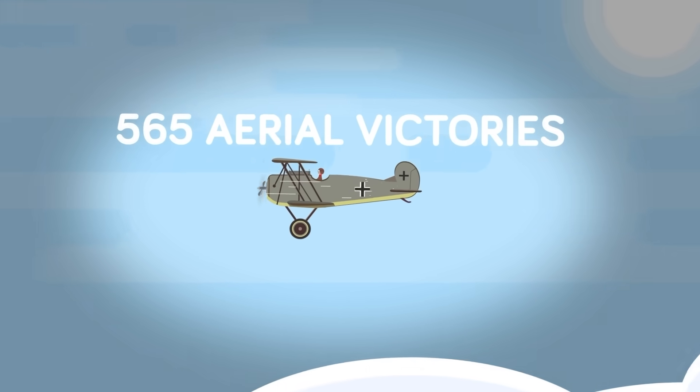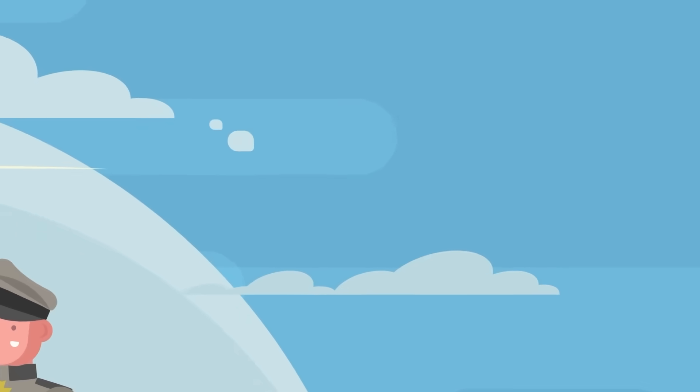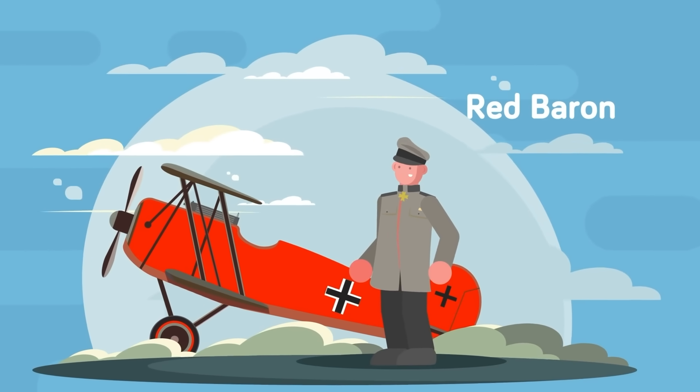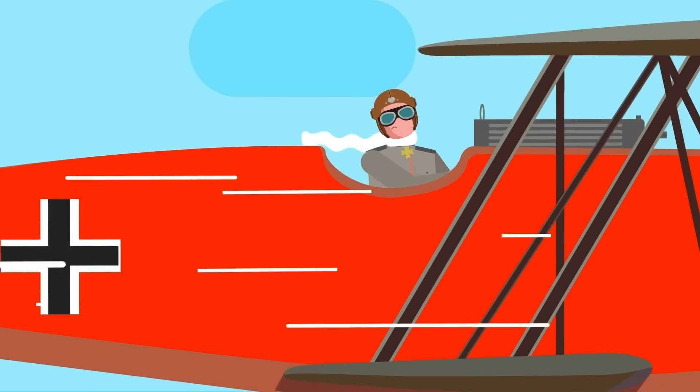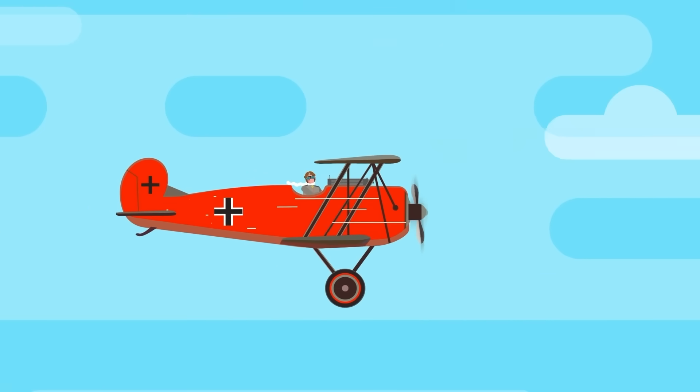Germany would score 565 aerial victories in the Fokker D-7's short lifespan, and its most famous pilot, the Red Baron, would go down in history as a true Fokker legend. But compared to the Raptor, the Fokker D-7, or anything else in the German arsenal, was basically just a pile of flying scrap.